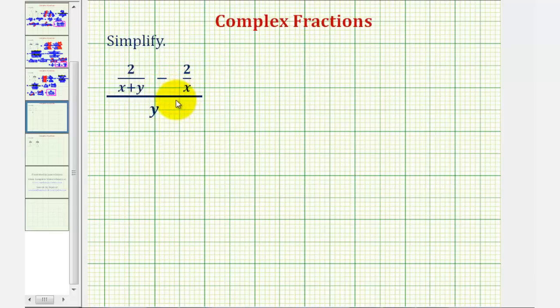We want to simplify the given complex fraction. To do this, we'll first find the difference of the two rational expressions on top.